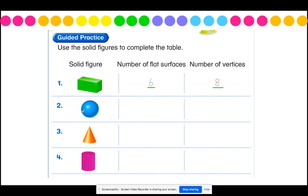Let's talk about our sphere. A sphere is round on all sides and can roll in any direction. Does a sphere have a flat surface? Shout out your answer. I hope that you said no. It does not have any flat surfaces, so we would write zero as our answer. If it doesn't have any flat surfaces, it wouldn't be possible for them to come to a point. So does a sphere have any vertices? Shout out your answer. I hope that you said no. There are zero vertices in a sphere.